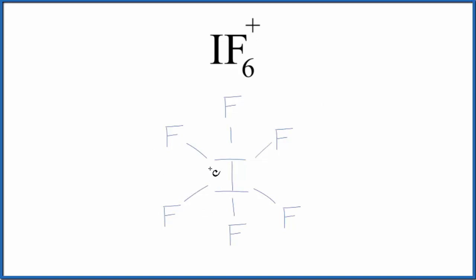The first thing we need to do is count the valence electrons. Iodine is in group 17, sometimes called 7A, that has 7. Plus fluorine, also in group 7, so we have 7 times the 6 fluorine atoms.